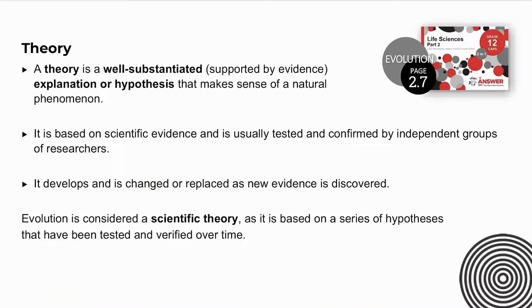A theory, on the other hand, is an explanation or interpretation of many hypotheses. It is a well-substantiated explanation that makes sense of a natural phenomenon, based on scientific evidence that can be tested and confirmed by independent researchers. It can be changed, developed, or replaced. Evolution is an example of a theory.